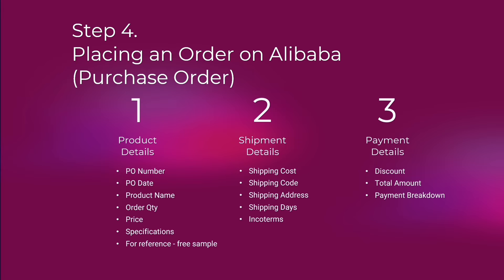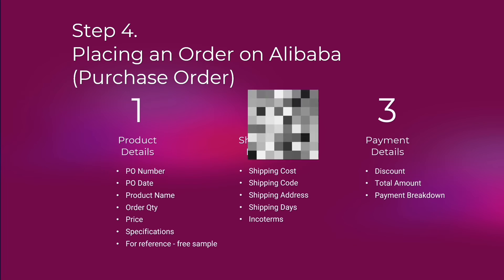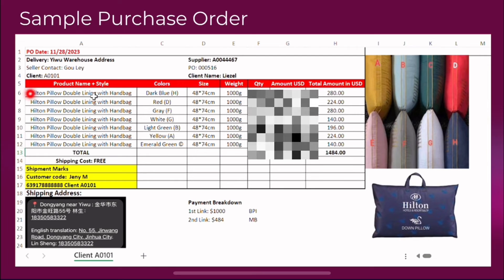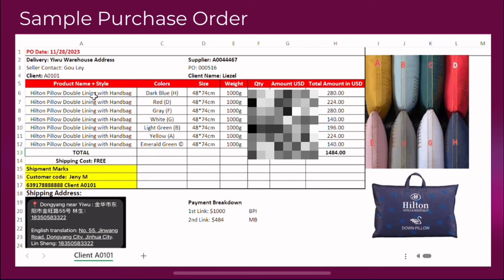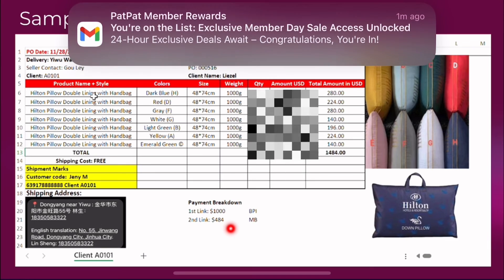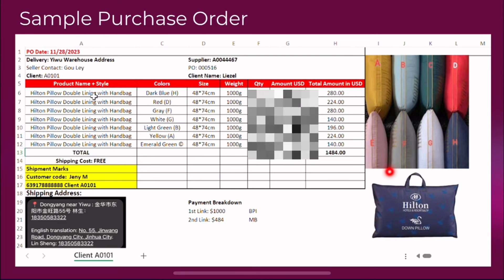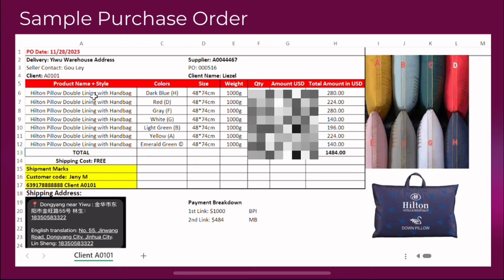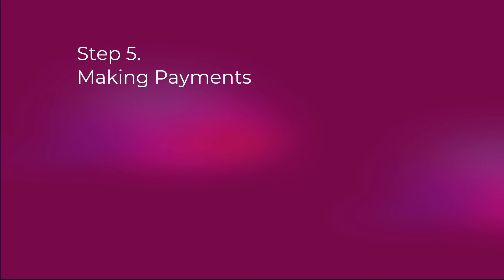This is just guidance from my end — I'm not an expert. Here's a sample purchase order from my import last year. I use an Excel file to document what was agreed with my supplier. You can see the product details — for example, a Hilton pillow with double lining and handbags. Make sure to specify colors, sizes, weight, quantity, and amount. Then shipment details, payment breakdown, and pictures of the product I'm importing to make sure we are on the same page.